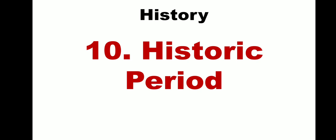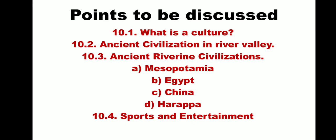History chapter 10: historic period. Points to be discussed — 10.1 What is culture, 10.2 Ancient civilization in river valley, 10.3 Ancient riverine civilizations with four sub-points: (a) Mesopotamia, (b) Egypt, (c) China, (d) Harappa, and 10.4 Sports and entertainment. We will be seeing one point each at a time.